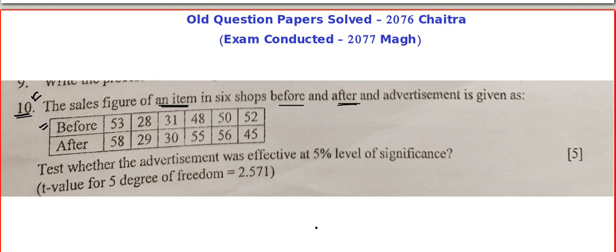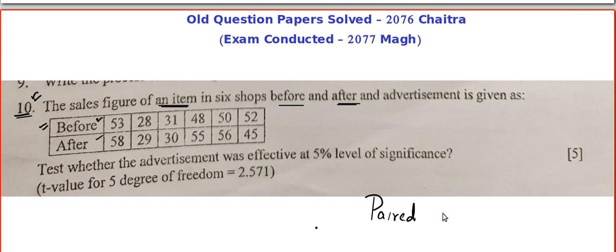Before and after an advertisement was given. Look at this — they have given a sales figure per week, though no units are clearly mentioned. So before the advertisement they were able to sell 53, 28, and so on, maybe in different shops. The question is a little vague — they have not mentioned any units or weeks. No problem. The before and after data is given.